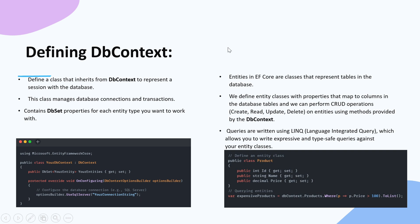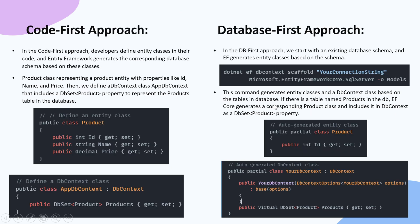Entities in EF Core are classes that represent tables in the database. We define entity classes with properties that map to columns in database tables, and we can perform CRUD operations — Create, Read, Update, Delete — on entities using methods provided by the DbContext. Queries are written using LINQ, which allows you to write expressive and type-safe queries against your entity classes. For example, you can write a LINQ query against DbContext.Products to retrieve a list of products.